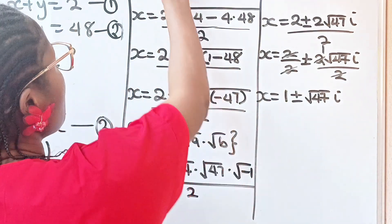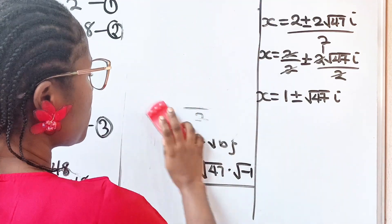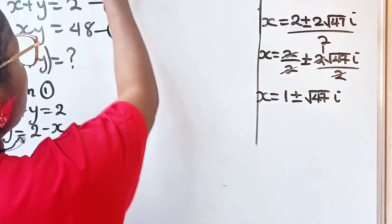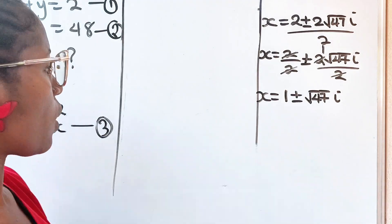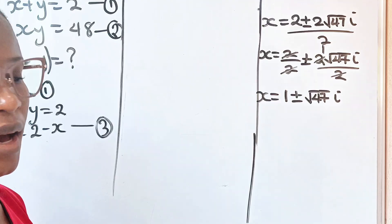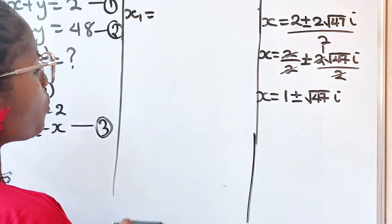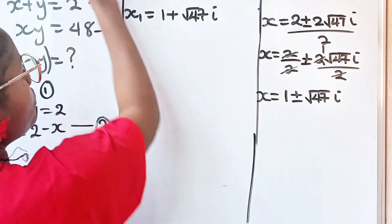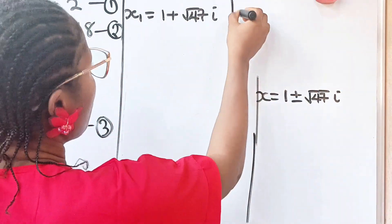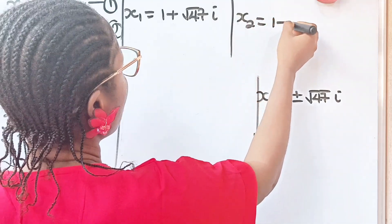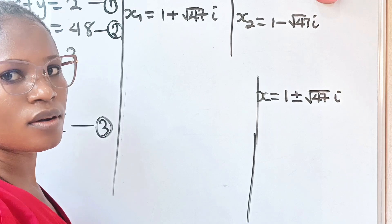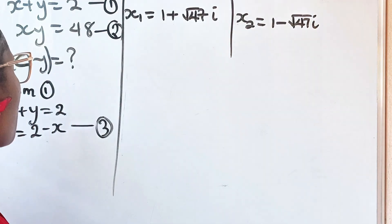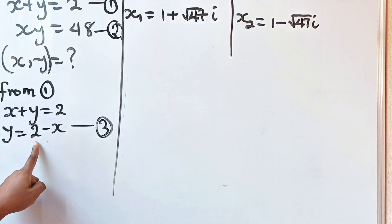We have two values of x. x1 equals 1 plus root 47i, and x2 equals 1 minus root 47i. Now let's find the corresponding values of y. Recall from equation 3 that y equals 2 minus x.